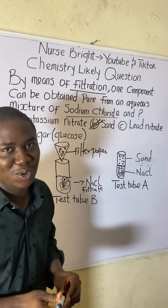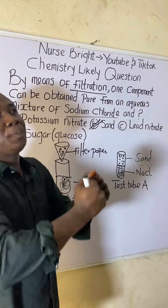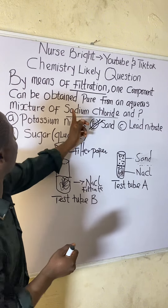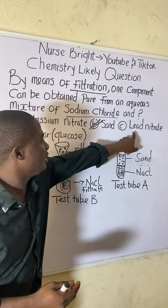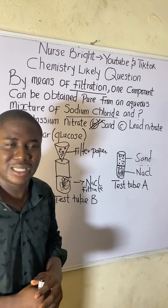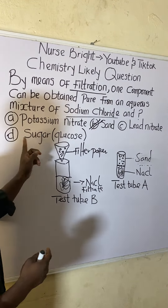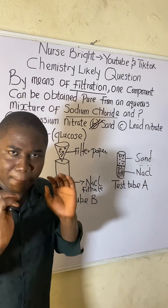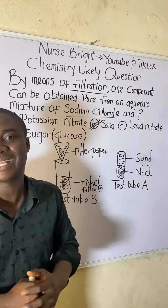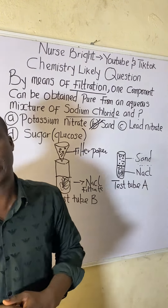The answer is option B — sand. Sand can be obtained pure from an aqueous mixture with sodium chloride by filtration. The other options such as potassium nitrate, lead nitrate, and sugar are all soluble and would dissolve, so they cannot be separated by filtration. That's how this question is analyzed and answered.